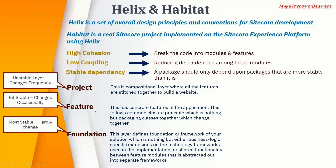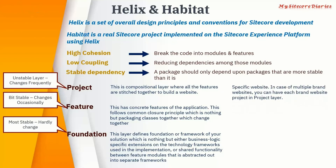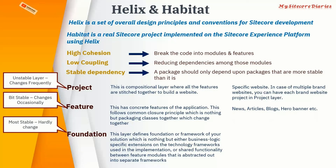As an example, a video studio website would go in the Project folder. If you have multiple brands like those under P&G — such as different washing powder brands — each brand website goes into the Project layer. Features like news, articles, blogs, and banners each have their own project inside the Feature folder. Foundation holds common code like theming or indexing logic. That is basically Helix and Habitat.